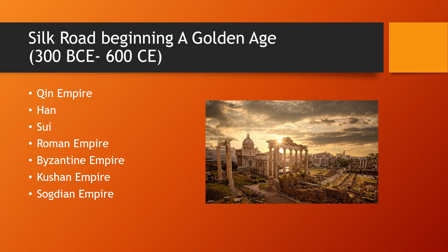In the West, we have the Roman Empire. We have Alexander the Great during this time. He expands the empire to India and Egypt, and monsoon winds are used at this time to expand the empire as well. Parthia is at war with the Roman Empire, and centrally, the Kushan Empire begins.